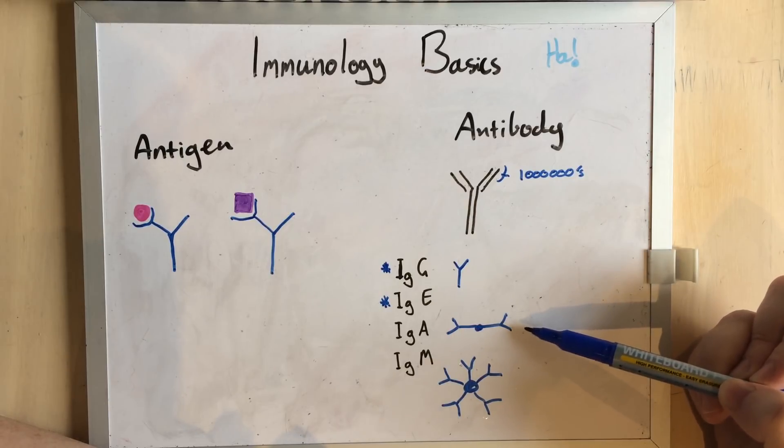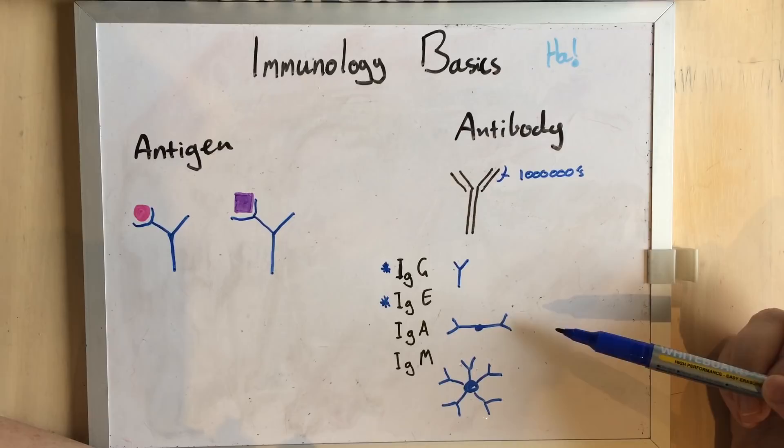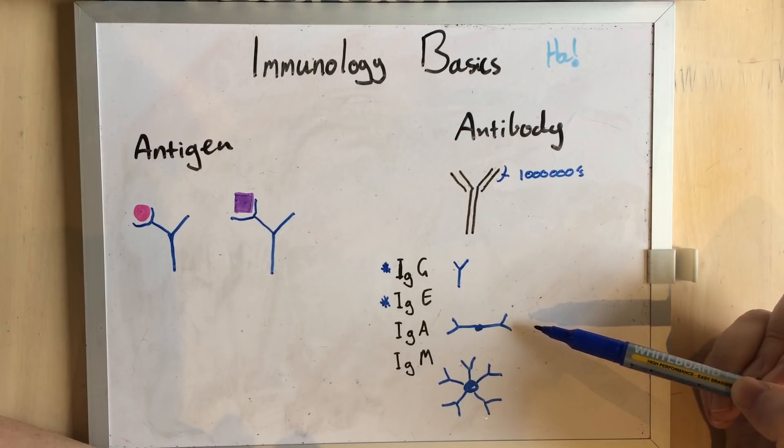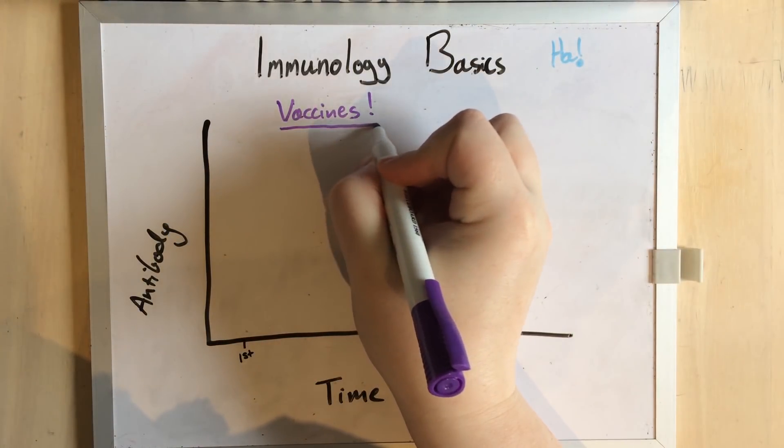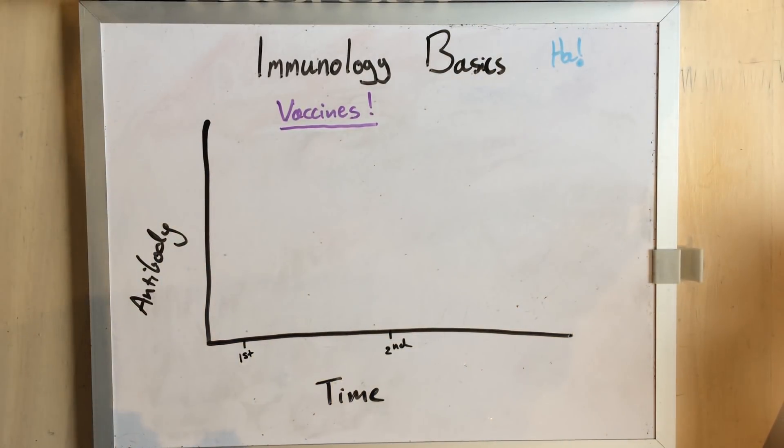This is why there's increasing developments in intranasal and oral vaccines. So how do vaccines work? Well, vaccines are basically target practice for our immune system.